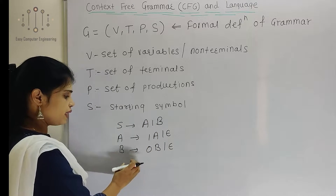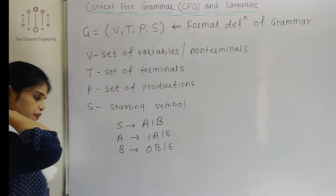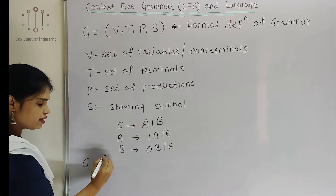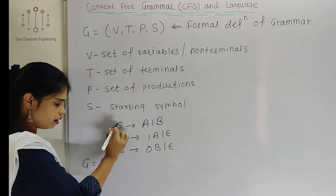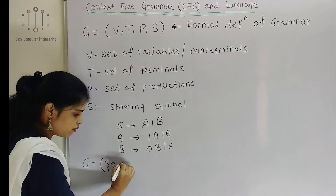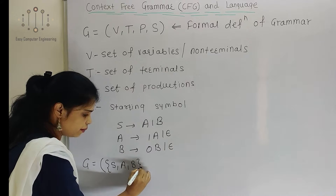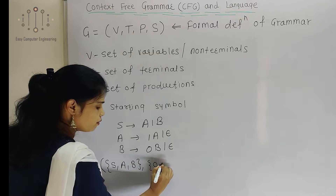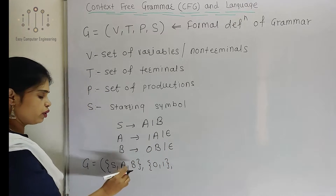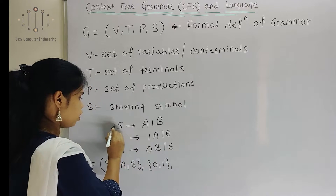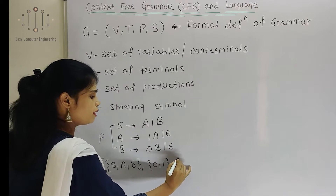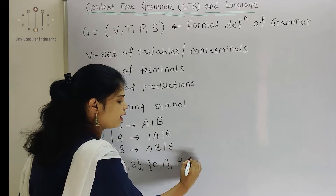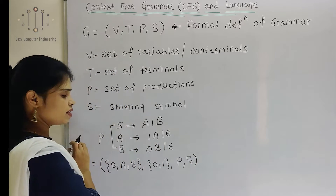Terminals are represented with small letters. Now, for this example grammar, we will write the four tuples V, T, P, S. S is my starting symbol. How many variables are there? Three variables: S, A, B. How many terminals are there? One and zero — we are not going to consider epsilon here. Then P is the set of productions — all of these are the productions for every non-terminal. And S is my starting symbol for this grammar.